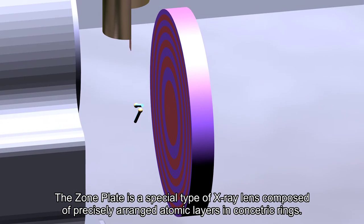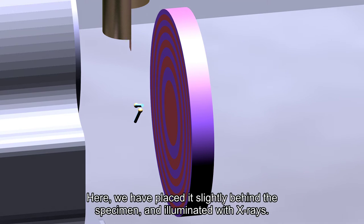The zone plate is a special type of X-ray lens composed of precisely arranged atomic layers in concentric rings. Here we have placed it slightly behind the specimen and illuminated with X-rays.